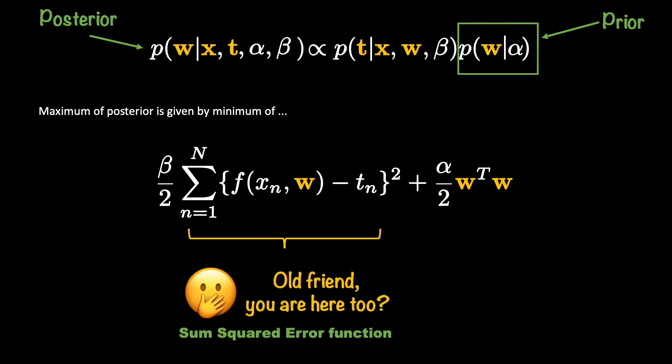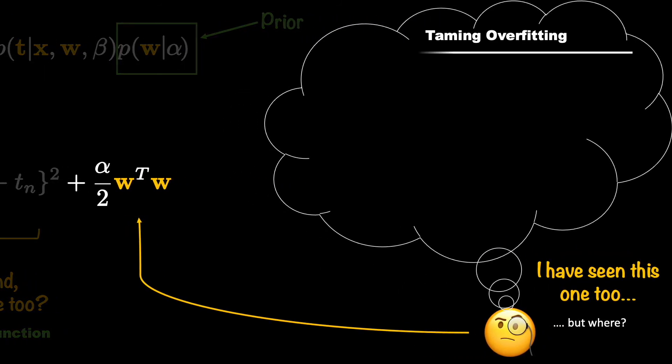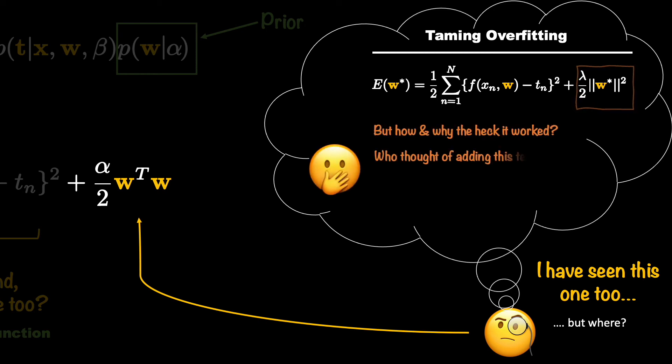And our old friend is here too, the sum squared error function. The second term also by the way looks awfully familiar. Where have we seen this one? Remember part one when we tamed overfitting by adding the extra term as the regularizer? Yes, this was ridge regression. But in part one, this term did not naturally arise as it has now. By the way, W transpose W is equal to W square. So there is just the notational difference. It's the same thing. It's going to give you the same value at the end of the day.